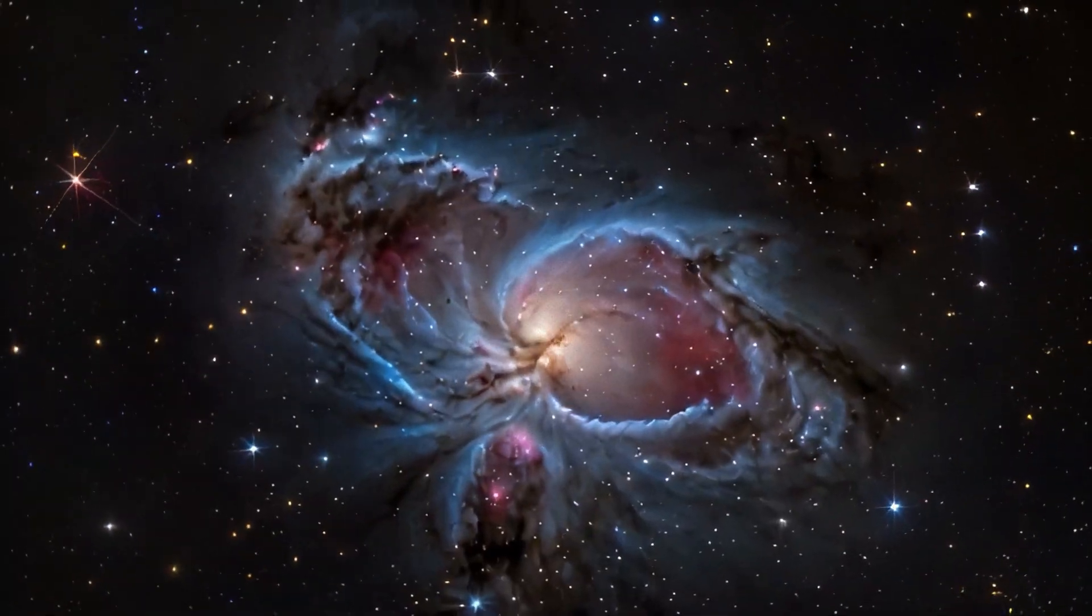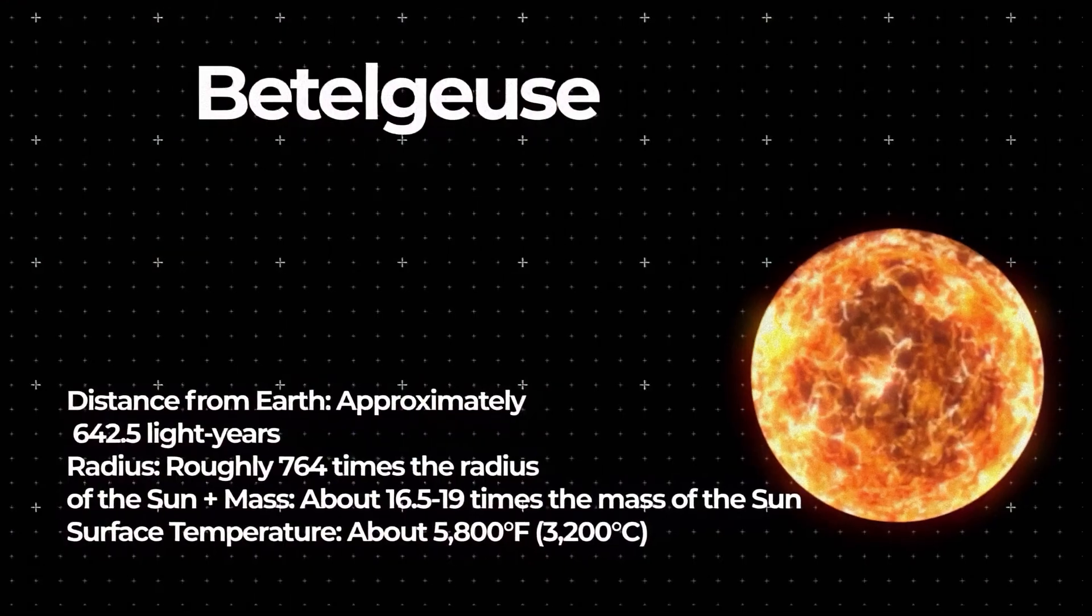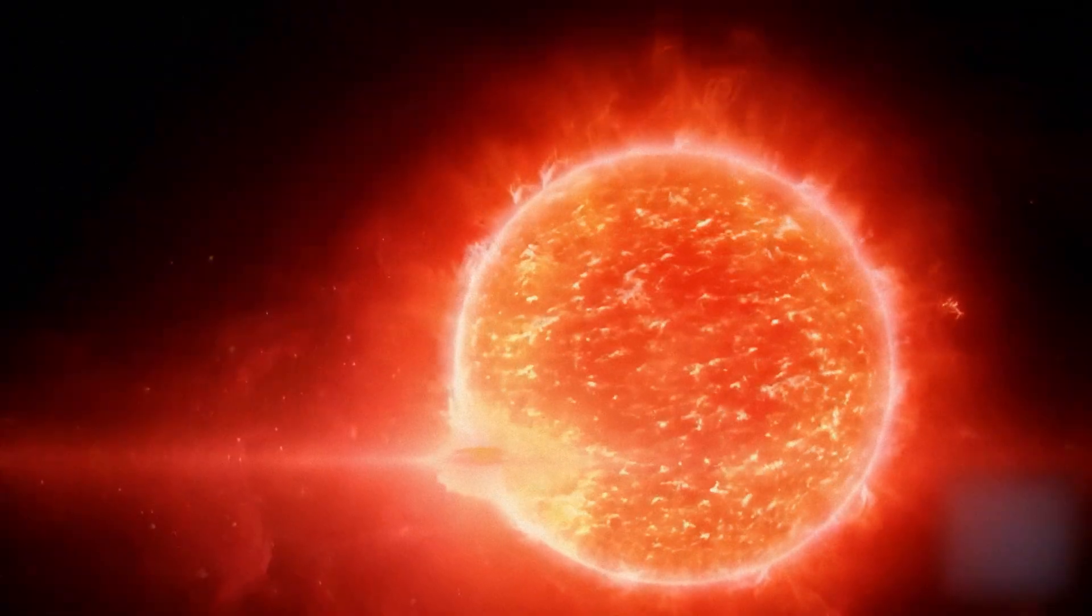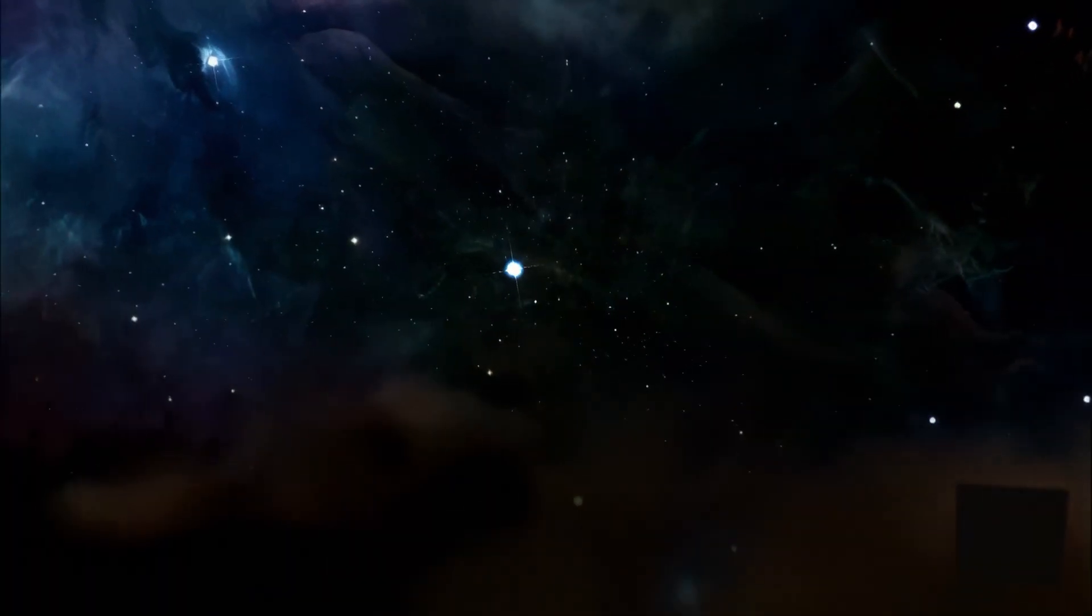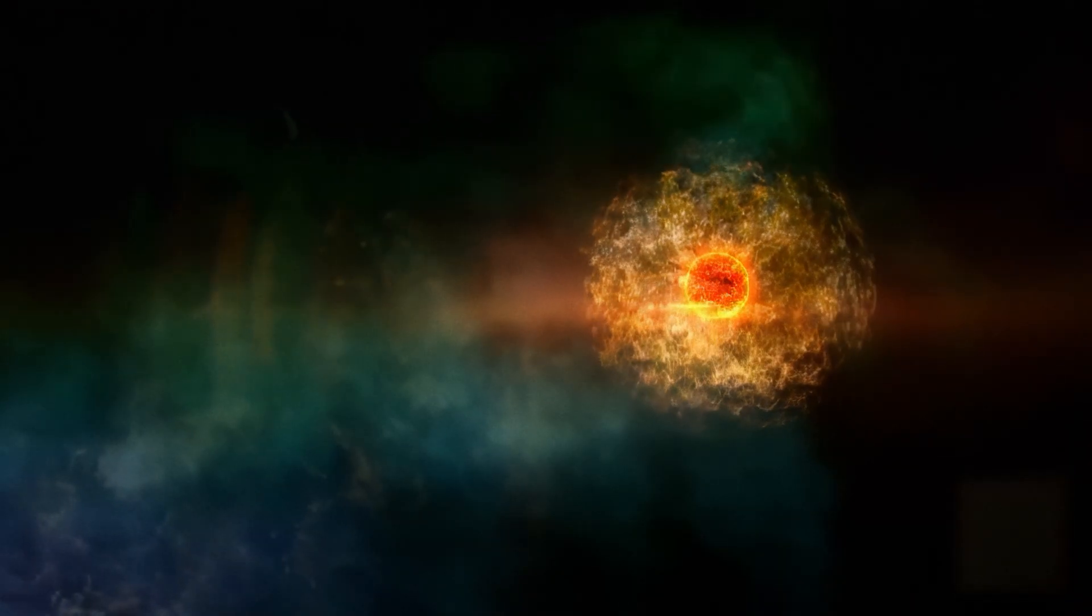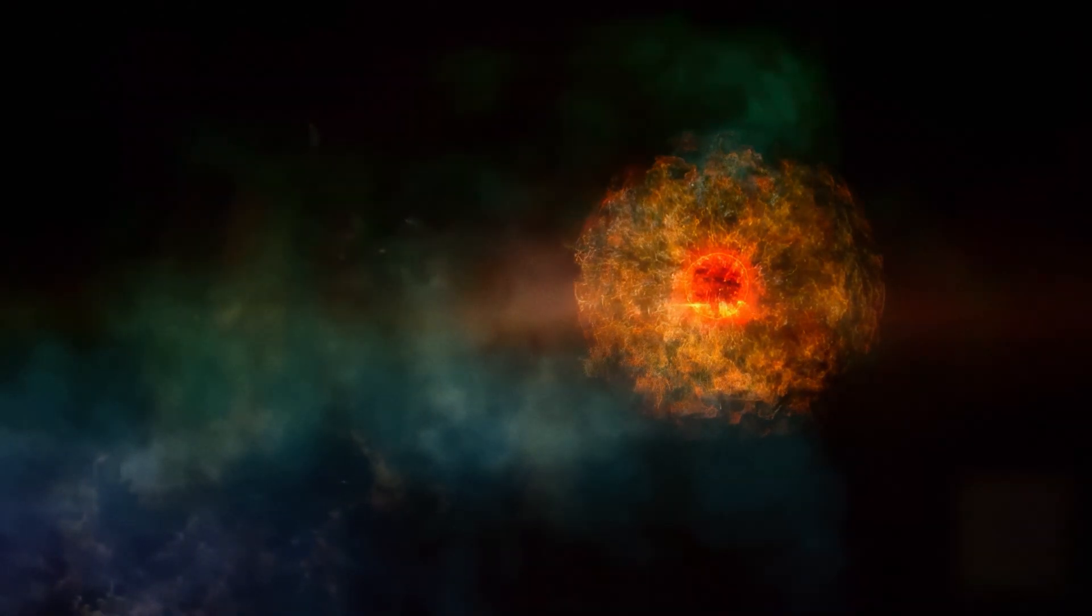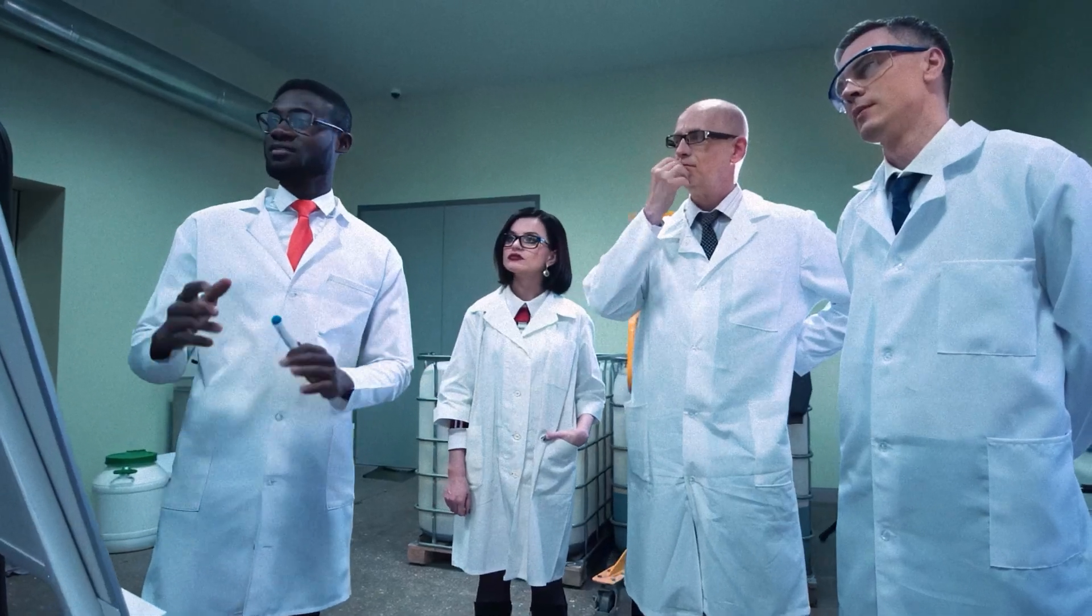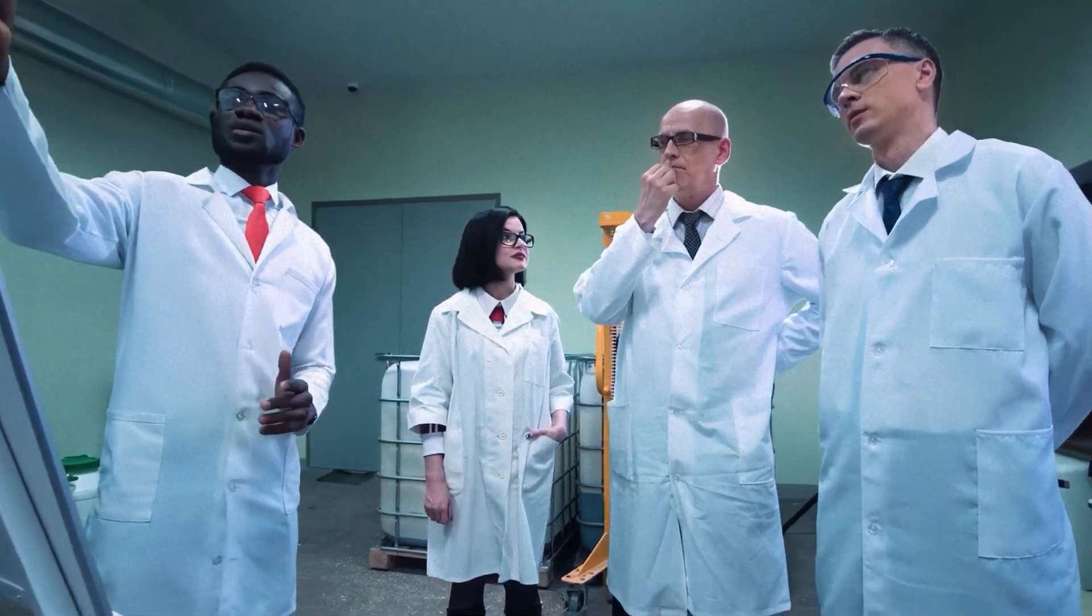Located in the constellation Orion, Betelgeuse is a red supergiant and one of the brightest stars in the night sky. In recent years, scientists have observed significant changes in its brightness, indicating a possible approach to the supernova explosion stage. In December 2019, Betelgeuse unexpectedly dimmed, sparking numerous discussions and speculations about its imminent explosion.